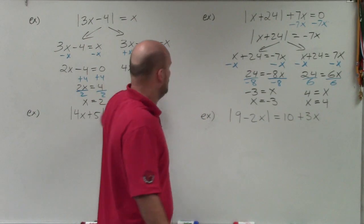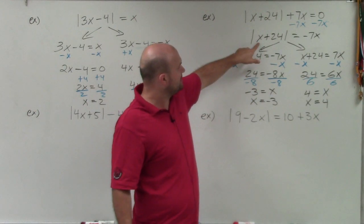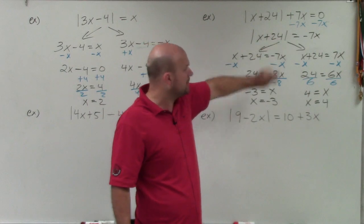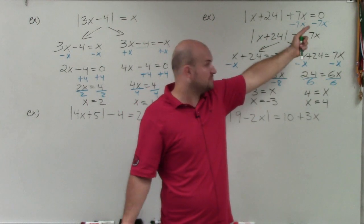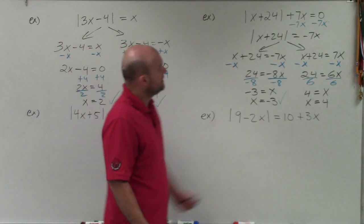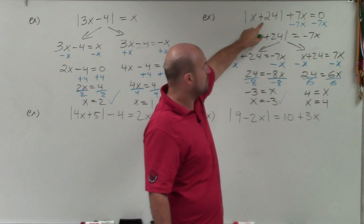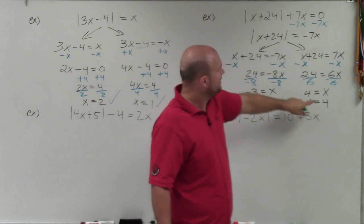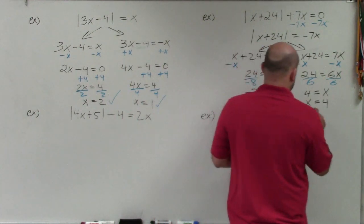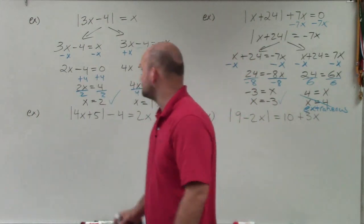Plugging in negative 3: negative 3 plus 24 is 21, absolute value of 21 is 21, so the left side has positive 21. On the right side, negative 3 times negative 7 is positive 21 — this one checks out. Now let's try 4: 4 plus 24 is 28, absolute value of 28 is 28, so the left side is positive 28. Plugging 4 in on the right side: negative 7 times 4 is negative 28. Positive 28 does not equal negative 28, so this is extraneous and not a solution to this equation.